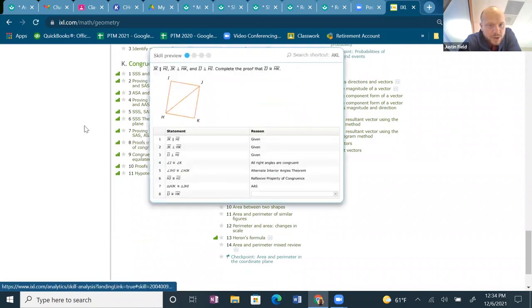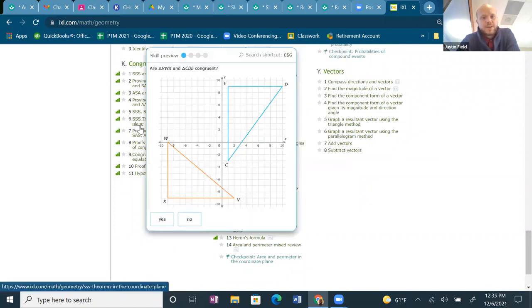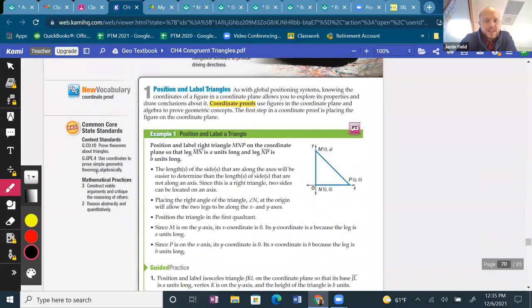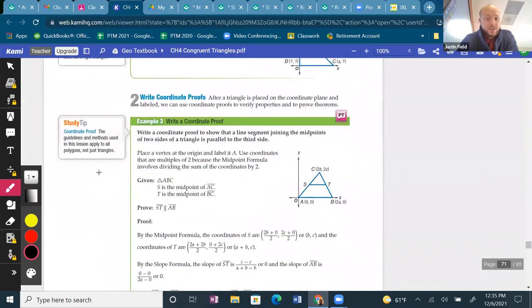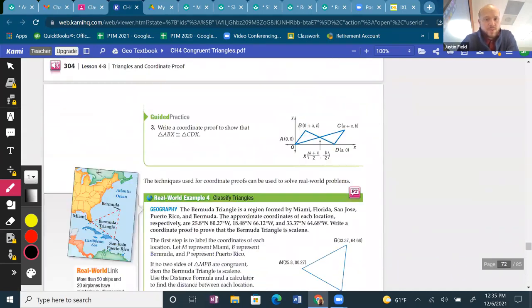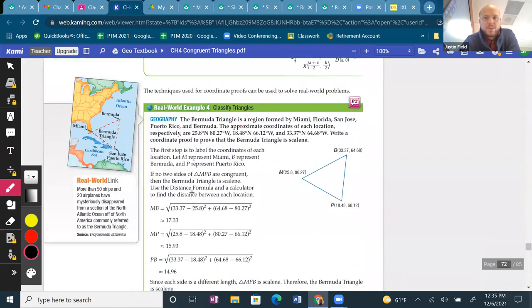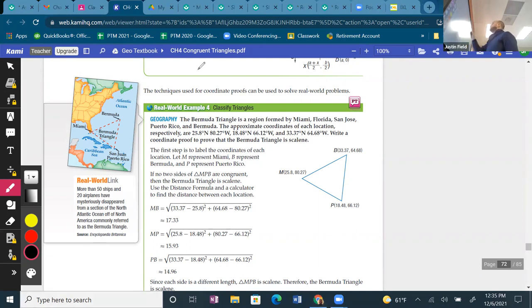Let's go back to the book. You have these other type of proofs - coordinate proofs. What do we do for coordinate proofs? We're mostly going to do side-side-side, which means we're going to use the distance formula. You could also use the midpoint formula. Now do you guys know the distance formula? It is X2 minus X1 squared plus Y2 minus Y1 squared, all under the square root.